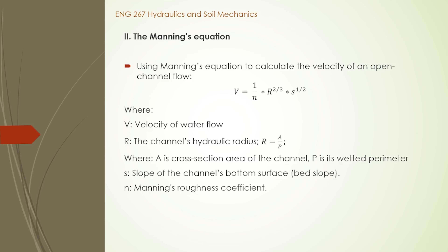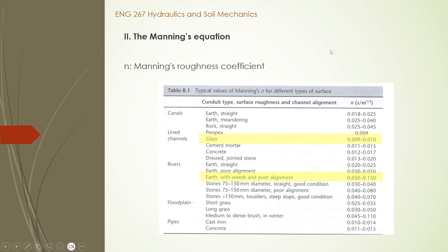The Manning's equation can be applied to calculate the velocity of an open channel flow. It includes three components: one is the hydraulic radius, which is equal to the cross-sectional area over the wetted perimeter; two is the slope of the channel's bottom surface; and three is the Manning's roughness coefficient, which depends on different types of surfaces, either rough or smooth.